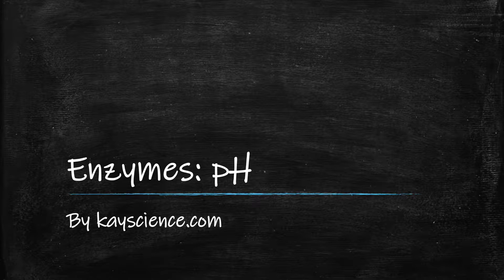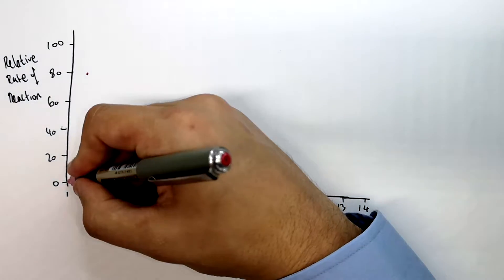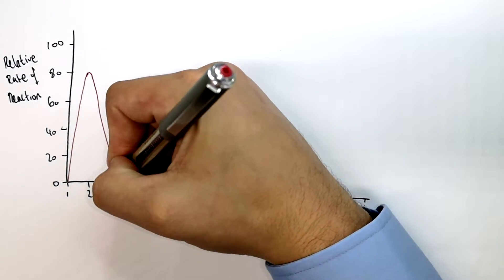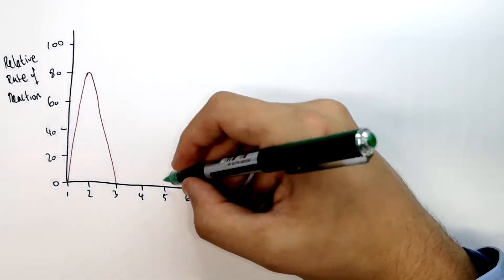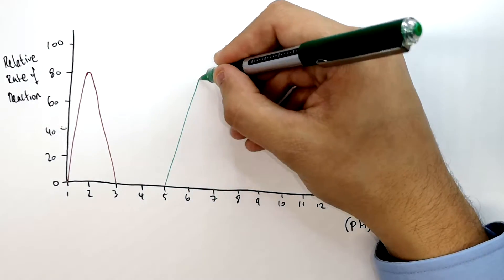The effect of pH on enzyme activity by kscience.com. This graph shows how the rate of reaction for an enzyme-controlled reaction changes as you change the pH.